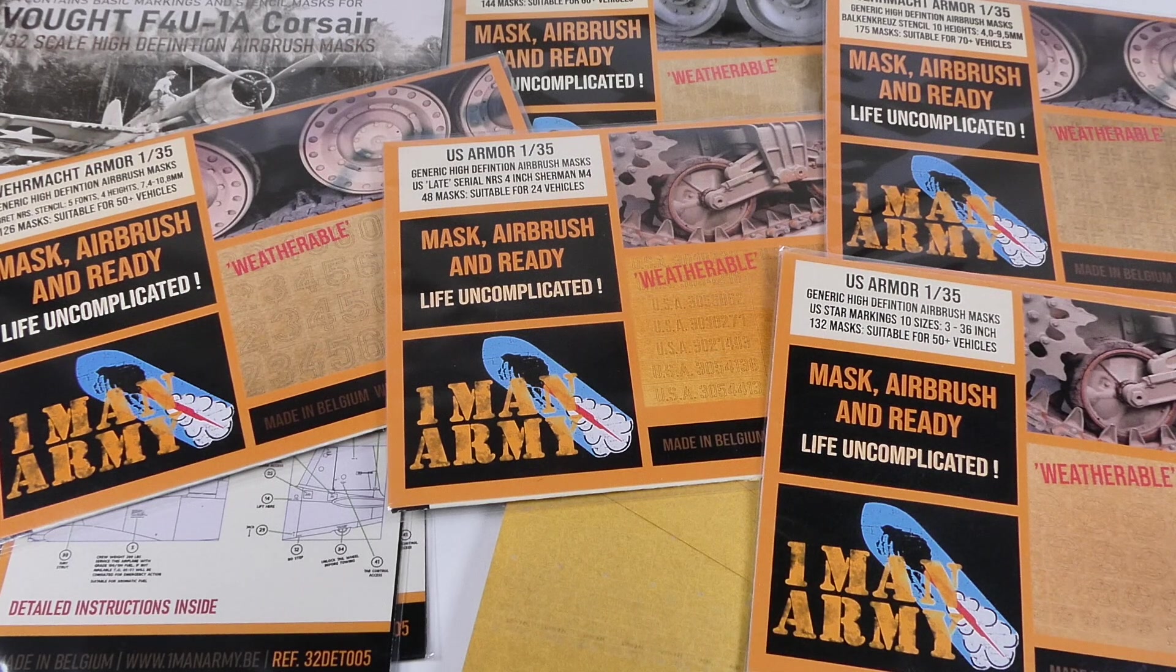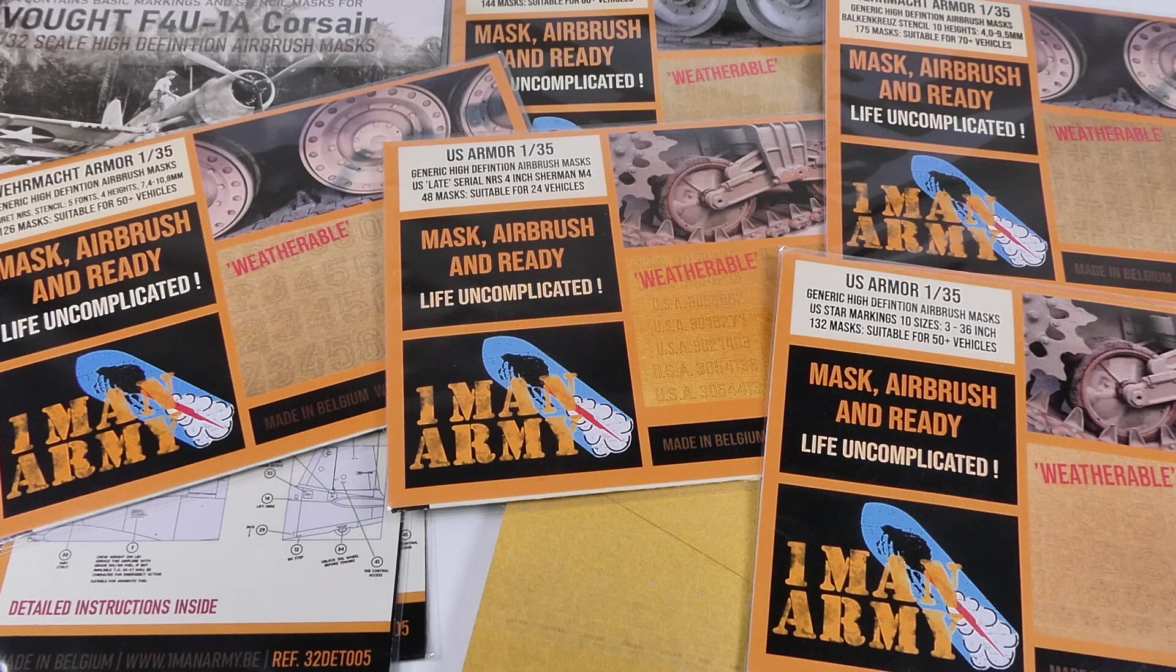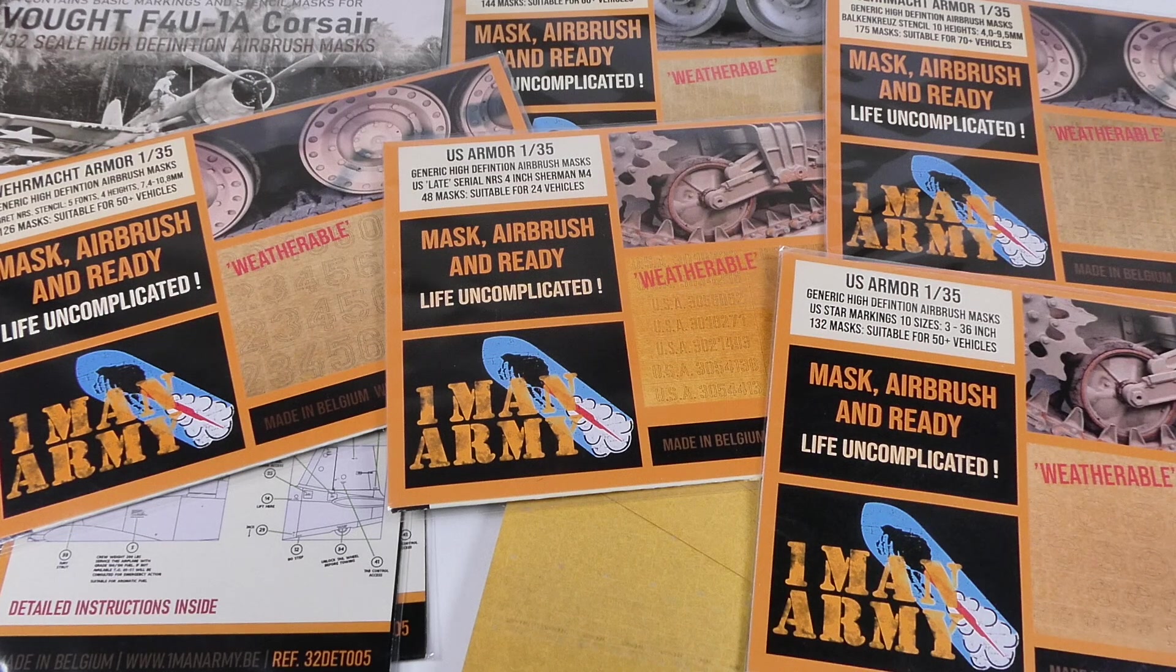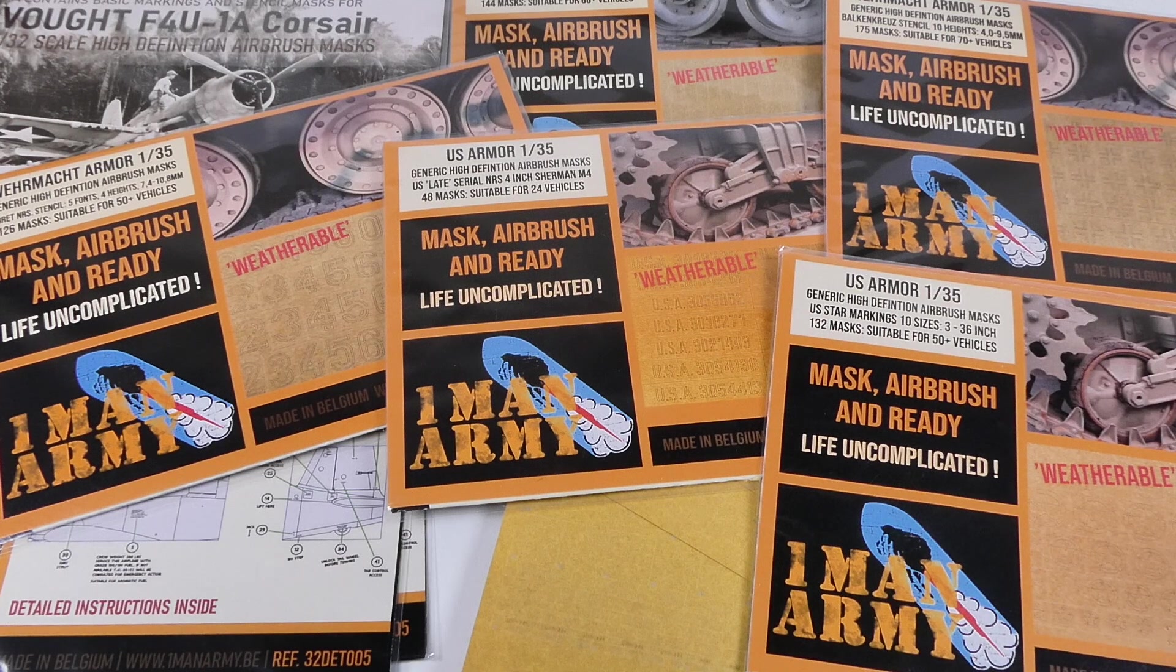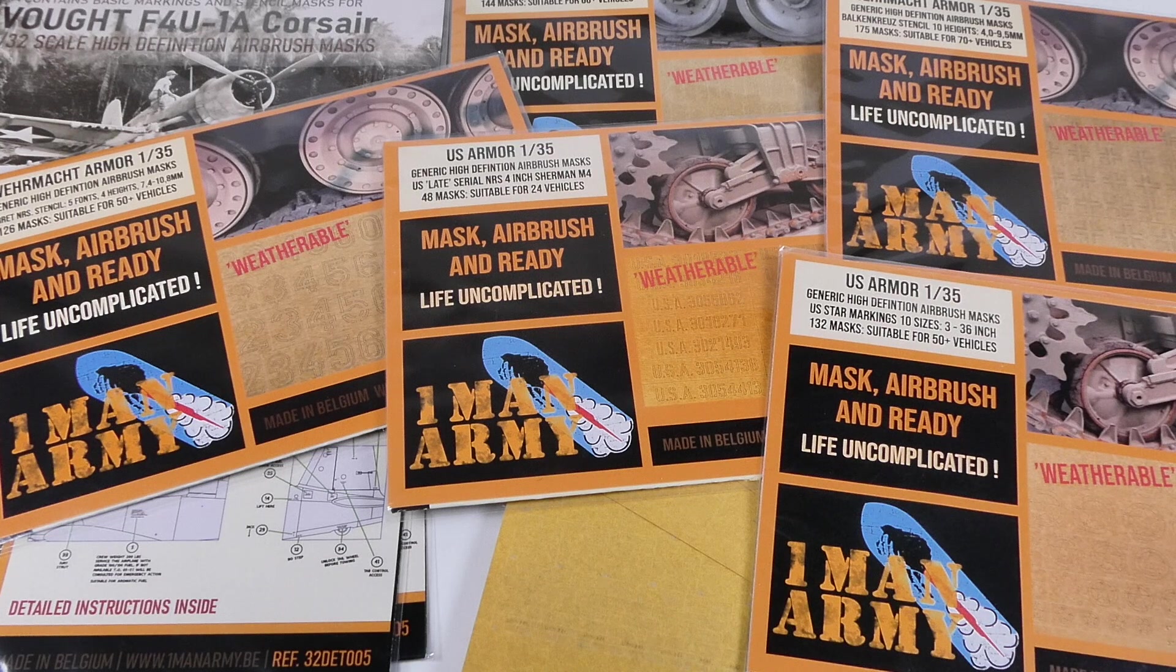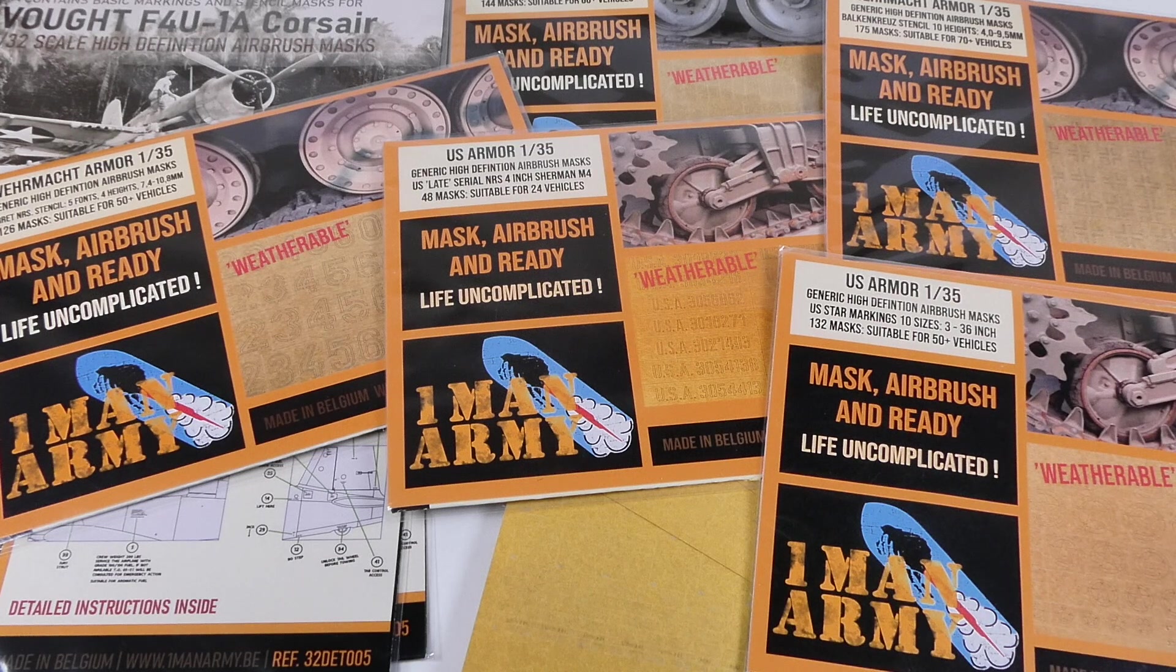Content-wise, I think that the US Stars set, German Divisional Emblem set, and the Russian turret markings are awesome, and I would totally buy these as they are. I do think, however, that the US Serial Numbers set and the German Balkankruz and Turret Numbers sets need to be updated and fixed a little bit.